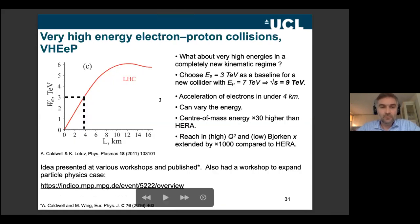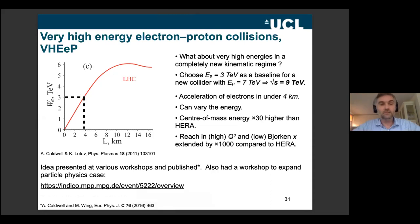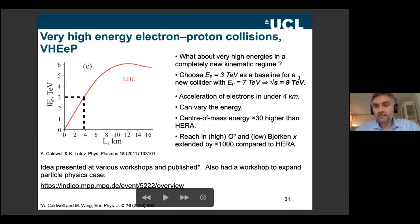The idea is to use AWAKE accelerator technology to get an electron beam of 3 TeV, using the LHC as the proton driver to create the wakefields. Electrons can be accelerated to TeV scales, giving a center-of-mass energy of 9 TeV for electron-proton collisions — way beyond anything done before, a factor of 30 higher than the previous collider, and extending the kinematic reach significantly.